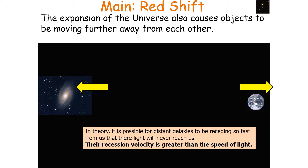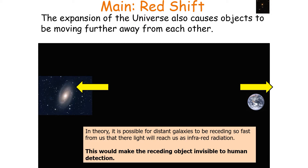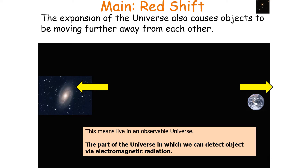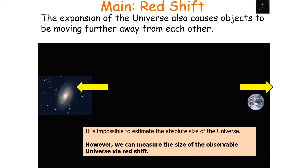In theory, it's possible for distant galaxies to be receding so fast from us that the light will never reach us, because their recession velocity is greater than the speed of light. This would make the receding object invisible to human detection. This indicates that we live in an observable universe — the part of the universe in which we can detect an object via electromagnetic radiation. We can measure the size of the observable universe via redshift, but it's impossible to estimate the absolute size of the universe.